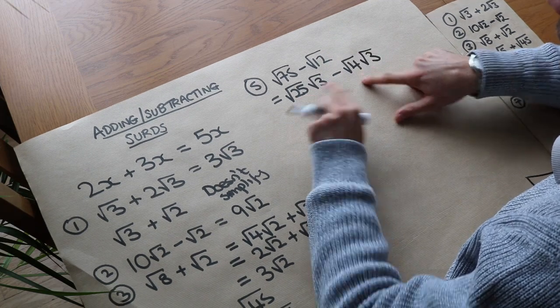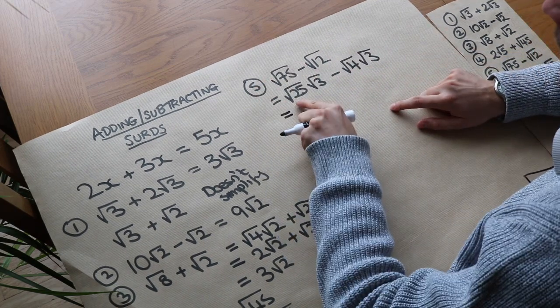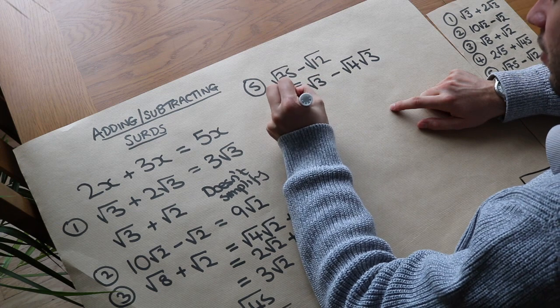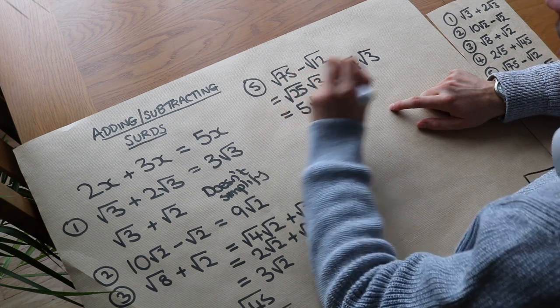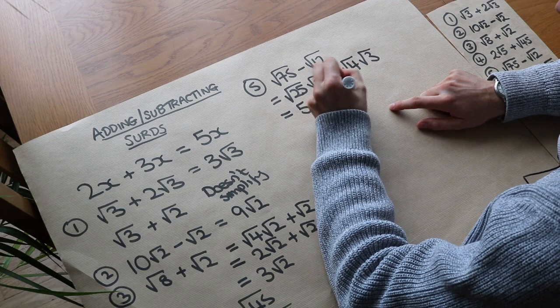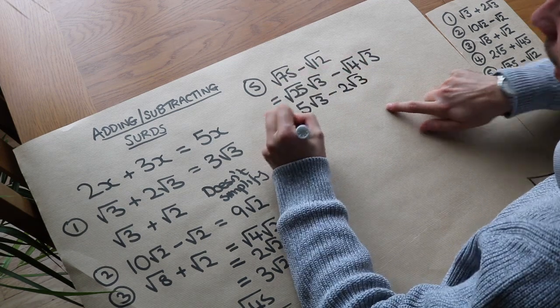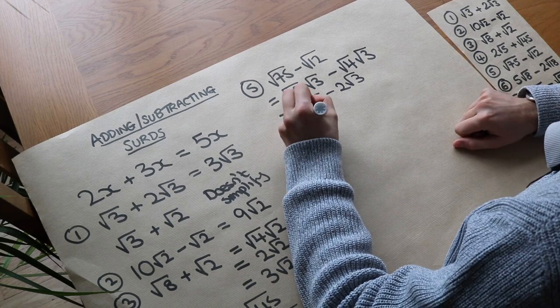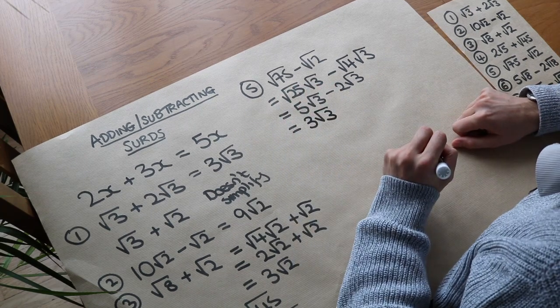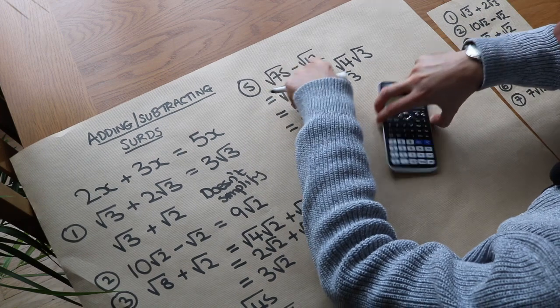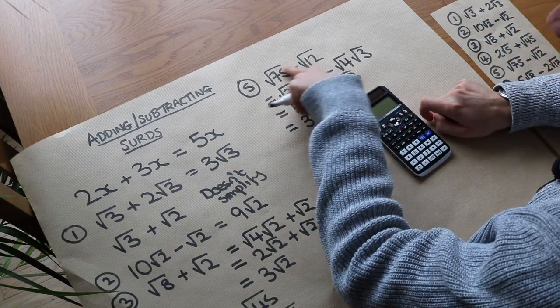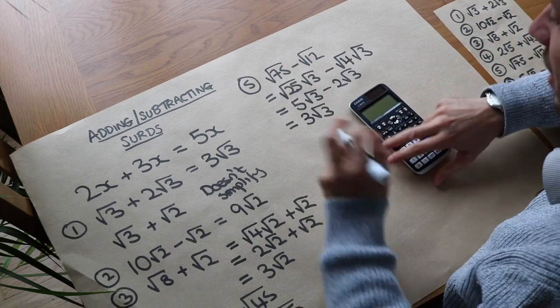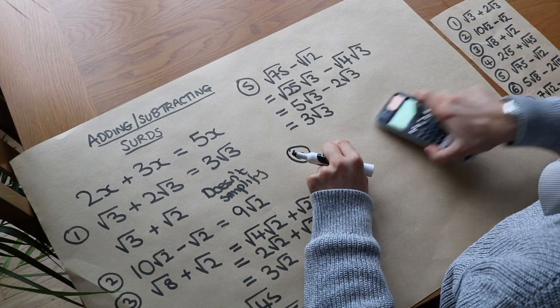Now that is 5 root 3 because the square root of 25 is 5 minus that 2 root 3. And if you've got 5 lots of root 3 minus 2 lots of root 3, you have 3 lots of root 3. So that is the final answer. And by the way, you can write these on your calculator exactly as it is, and it will give you that as the answer. So you can always check if you have a calculator available.